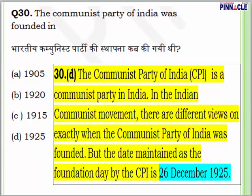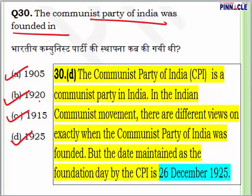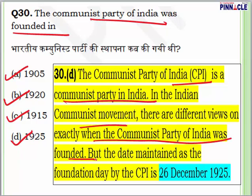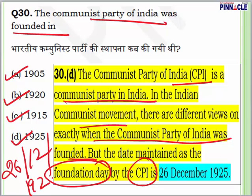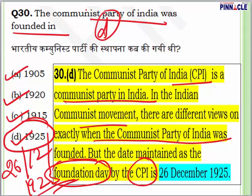Question 30: The Communist Party of India was founded in which year? Options are 1905, 1920, 1915 or 1925. In the Indian communist movement there are different views on exactly when the CPI was founded. But the date maintained as the foundation day by CPI itself is 26th December 1925. So 1925 is the right answer — option D.